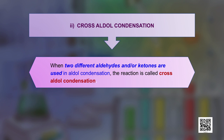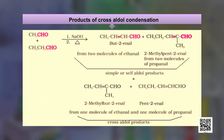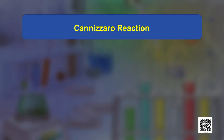When two different aldehydes are used, the reaction is called cross aldol condensation. For example, starting with ethanal and propanal gives a mixture of four products: two from self-condensation of each aldehyde and two from cross-condensation. Cross aldol condensation can also occur between two different ketones or between an aldehyde and a ketone.